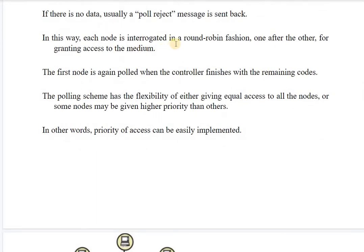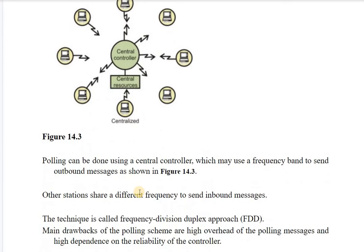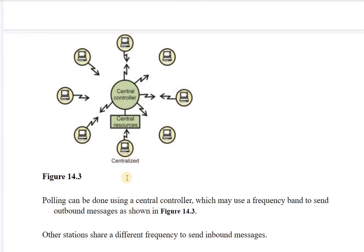Each node is interrogated in a round robin fashion, one after the other, for granting access to the medium. The first node is again polled when the control finishes with the remaining nodes. The polling scheme is flexible — giving equal access to all nodes or giving higher priority to some. In the diagram, there is a central controller issuing broadcast messages to all other computers regarding granting channel access.